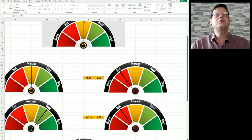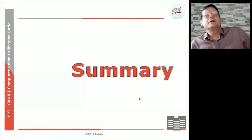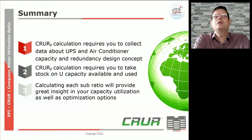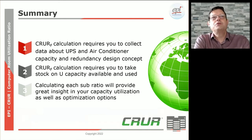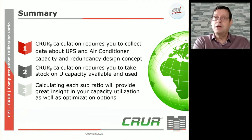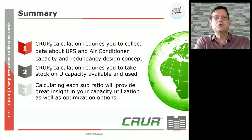As a summary, the CRURF calculation requires you to collect data about the UPS, the air conditioner especially, and the way you have done the redundancy design. Kilowatts for UPS, kilowatts for the air conditioner — and be careful, we need the sensible kilowatts, not the overall kilowatt. You need to look at the N capacity installed and what you are using, then calculate all the sub-components. Sub-ratios could also be calculated for each individual customer. If you have a commercial data center, you might want to look at this ratio for each customer to know which customer is heavily oversubscribed and which one is undersubscribed.